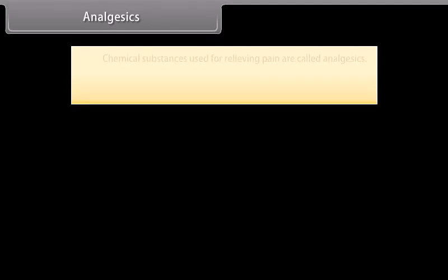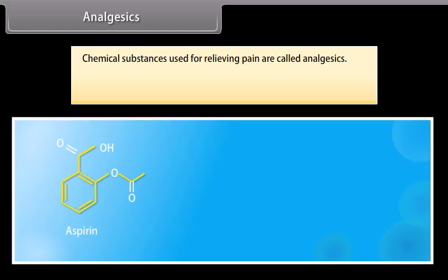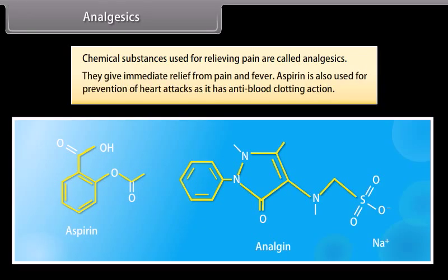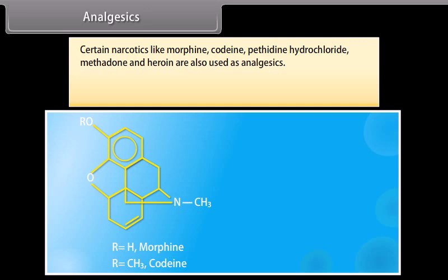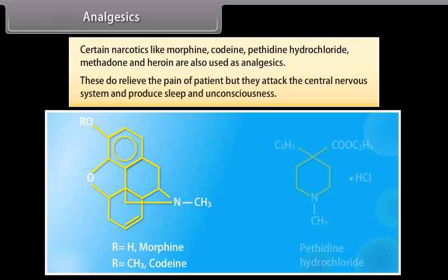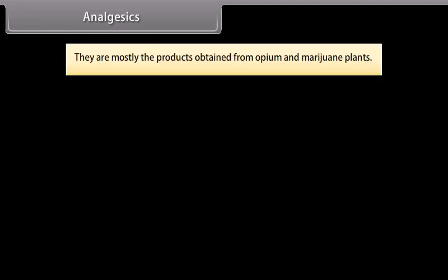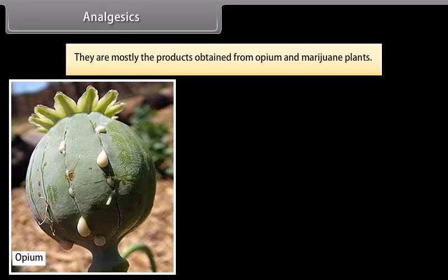Analgesics: chemical substances used for relieving pain are called analgesics. For example, aspirin and analgen give immediate relief from pain and fever. Aspirin is also used for prevention of heart attacks as it has an anti-blood-clotting action. Certain narcotics like morphine, codeine, pethidine hydrochloride, methadone, and heroin are also used as analgesics. These do relieve pain but they attack the central nervous system and produce sleep and unconsciousness. They are mostly products obtained from opium and marijuana plants.